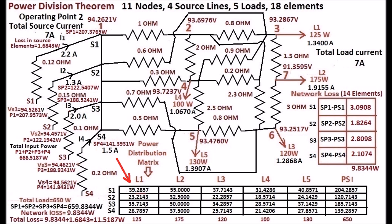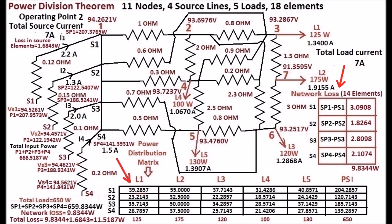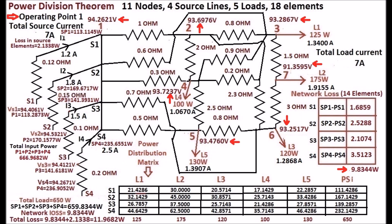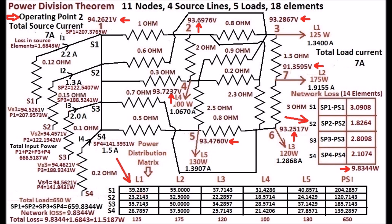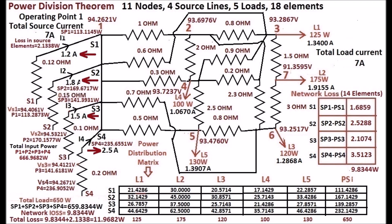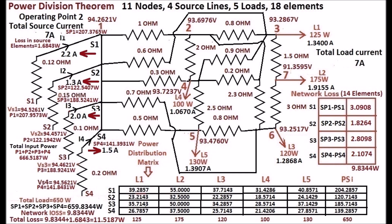Sharing of the 5 loads is now different since the source currents are different. Sharing of network loss is also different. Note that in operating point 1 and operating point 2, the network voltages and network losses are not changed — but sharing is only changed. Even though the sharing of currents is different, the network loss and network voltages are the same.